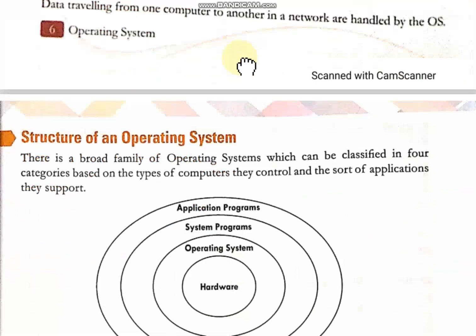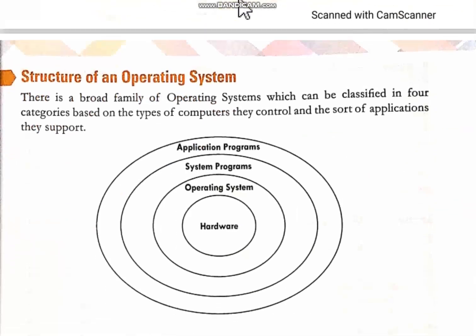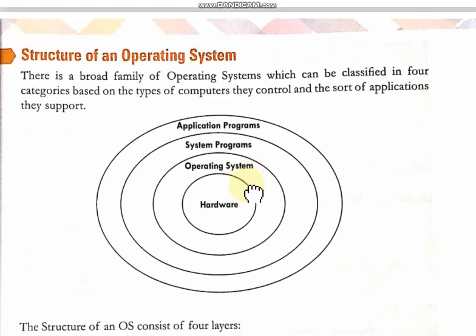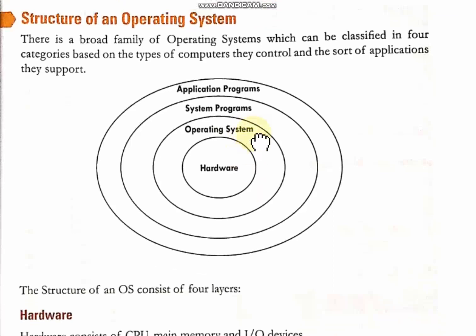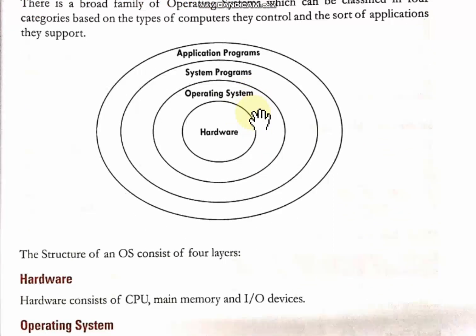Let's understand the structure of an operating system. The structure comprises four layers: hardware, operating system, system programs, and application programs. Hardware consists of the CPU, main memory, and all input-output devices. The innermost layer is hardware.